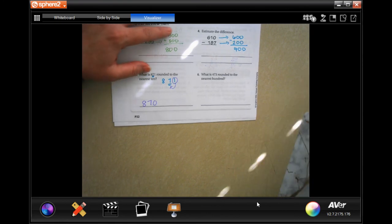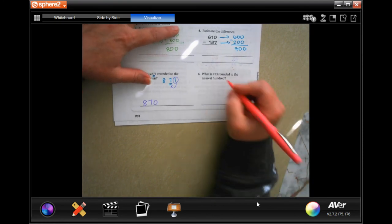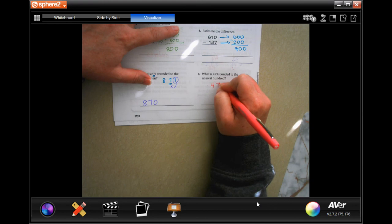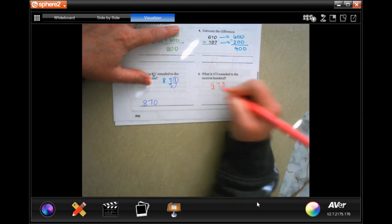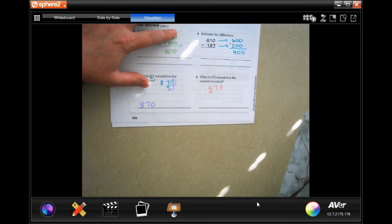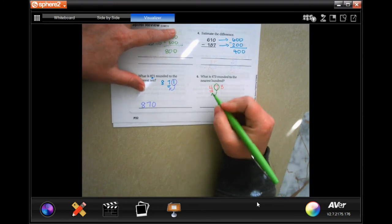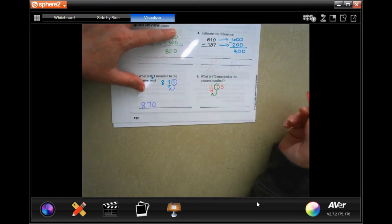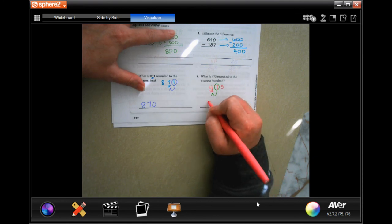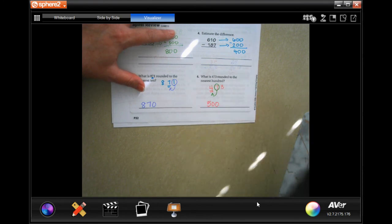What is four hundred and seventy-three rounded to the nearest hundred? So, four, seven, three, we want to round it to the hundred. That means we're going to look at the seven. If the seven is five or bigger, it's going to make the four go to a five. If the seven is smaller than five, then it's going to stay a four. Well, seven is bigger than five, so it's going to be five hundred.